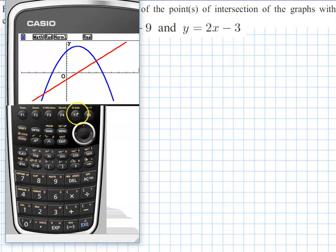Now on the Casio, we would go for G-solve, so F5, and then we have intersect, which is also F5, and we get our value of negative 3, negative 9, and if I push across to the right, the next point is the point 4, 5. So the calculator does it for us quite easily.